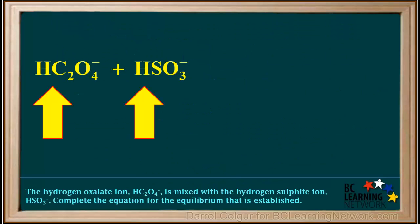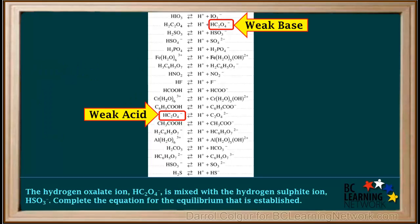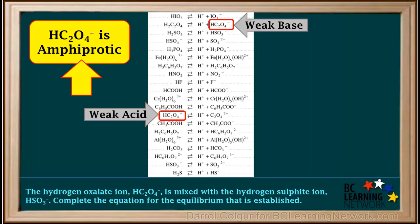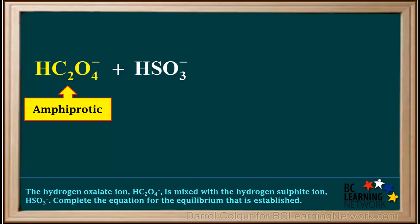We start by writing the formulas for the two given reactants, HC₂O₄⁻ and HSO₃⁻. We find HC₂O₄⁻ on the acid table and see that it is on both sides of the table, so it can act either as an acid or as a base. Therefore, HC₂O₄⁻ is amphiprotic. We'll label it as amphiprotic here.